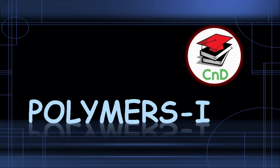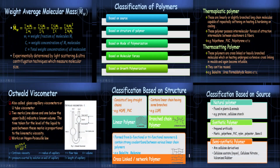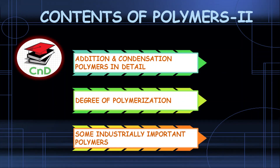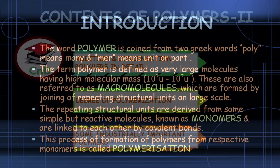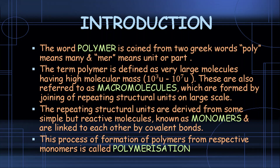Hello, this is Chalk Industrial and today we will be discussing the topic of polymers. Polymers are molecules having large molecular masses — essentially macromolecules. These polymers are formed from monomer units through various processes, and this process of forming polymers is called polymerization.